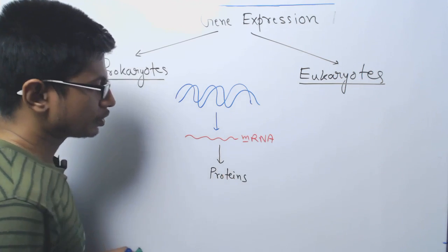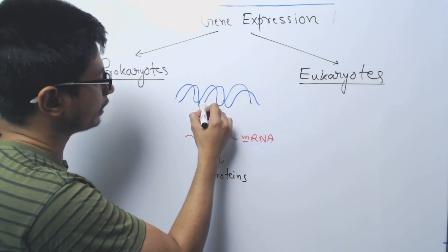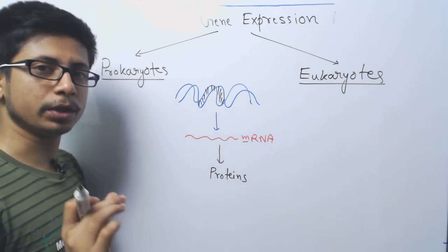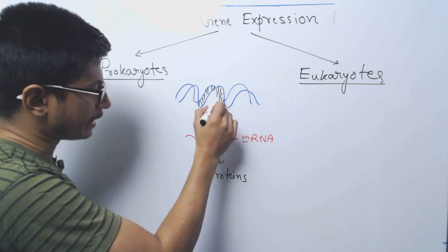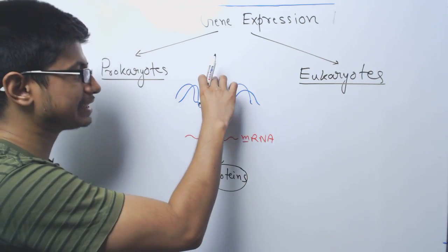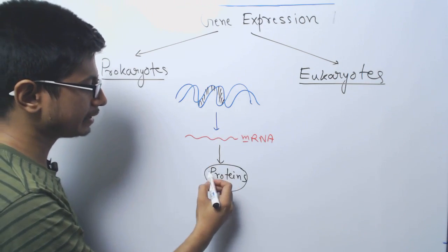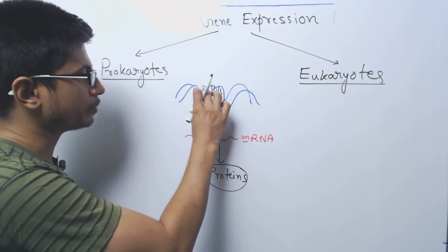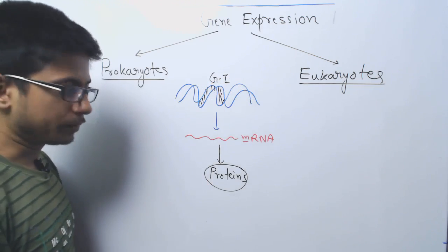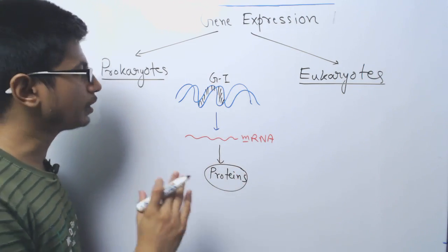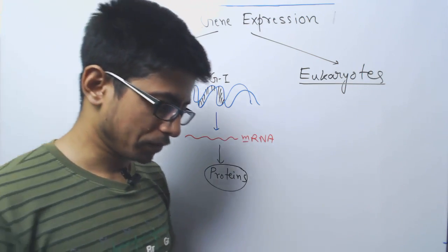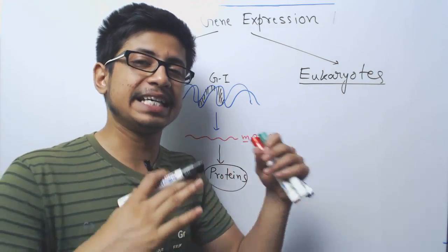So a specific gene segment produces one specific protein. That DNA segment is transcribed into mRNA and then translated into protein — this whole scenario is known as gene expression. For example, let's say this is an insulin gene; it produces the insulin protein. Once the insulin protein is made, we say that the insulin gene is expressed.